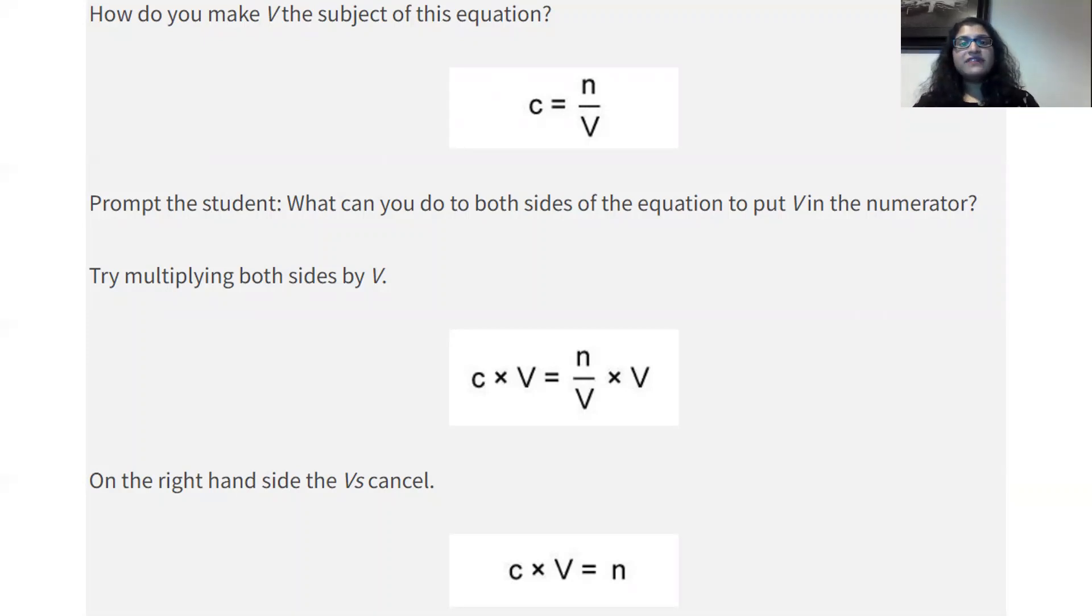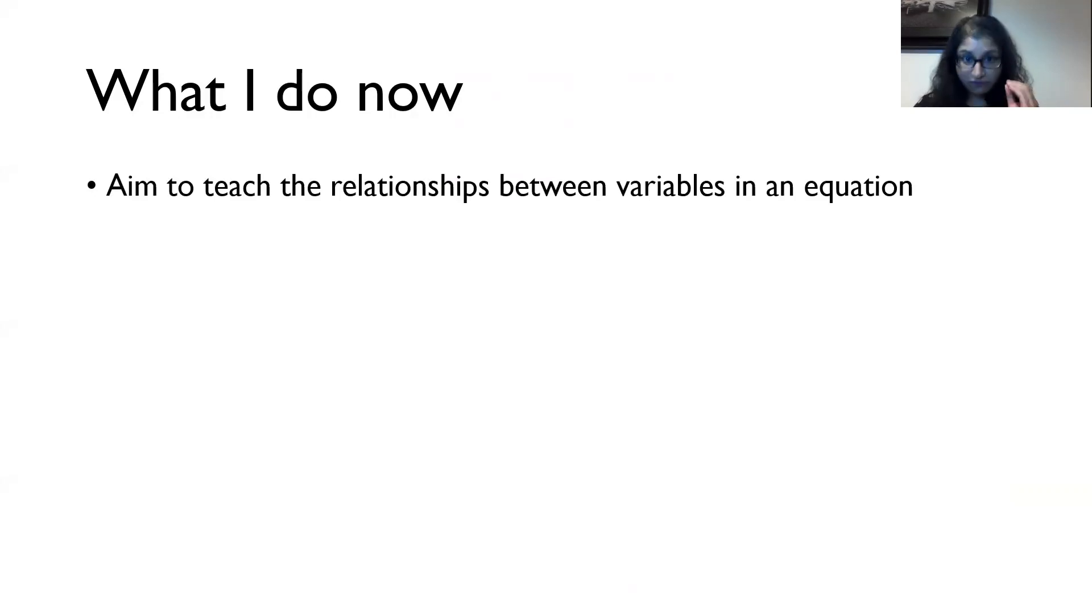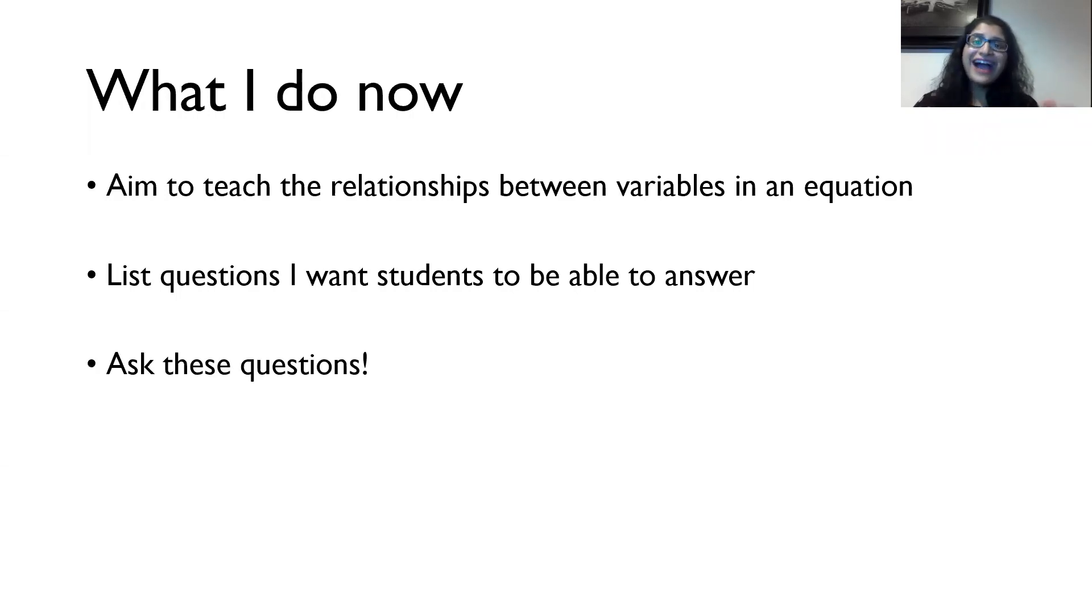And that's it. So there you have it. I've explained why I stopped using formula triangles, how I go about doing it, how I teach rearranging as well these days. And so what do I do now? Overall, I aim to teach the relationships between variables in an equation. I focus on that first and foremost. I list all the questions that I want students to be able to answer. What is the unit of density, for instance? And then very importantly, I ask these questions. Once I've done my explanation, I try to make sure the students know the answers and then test them on it over and over again.